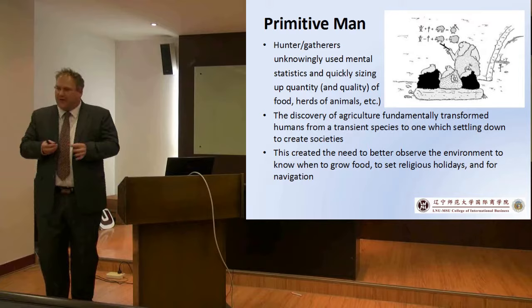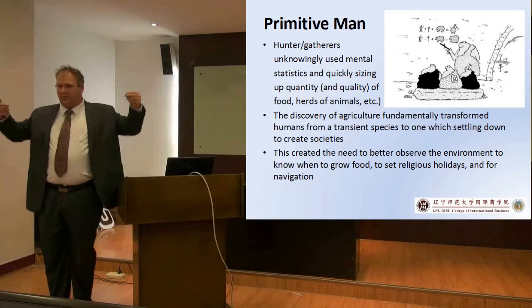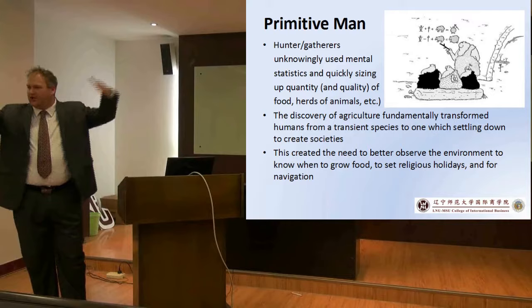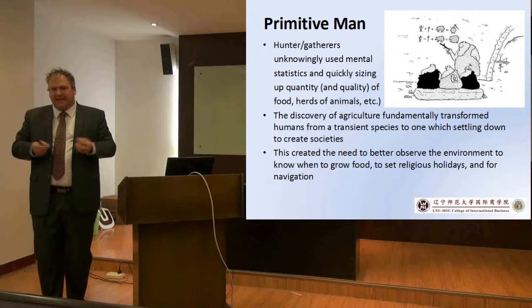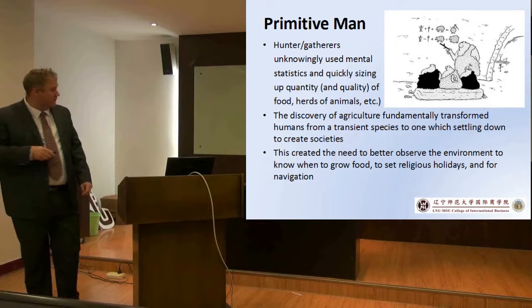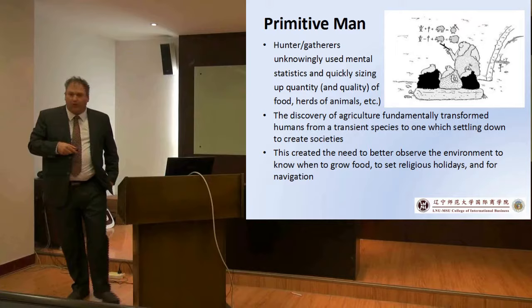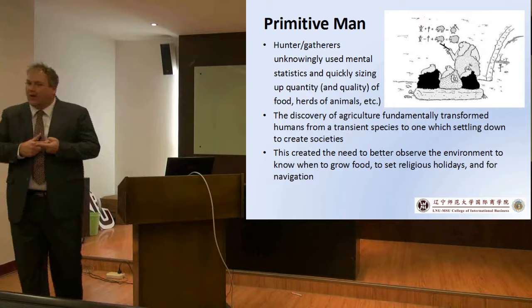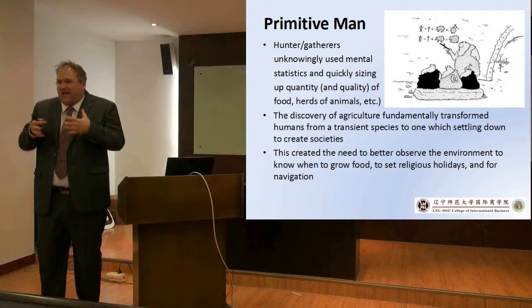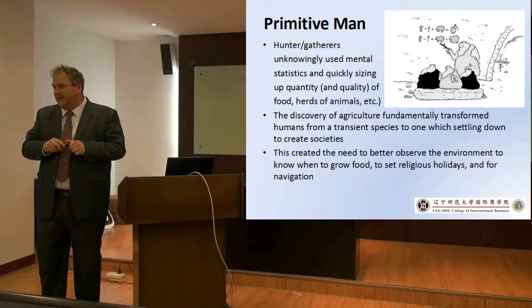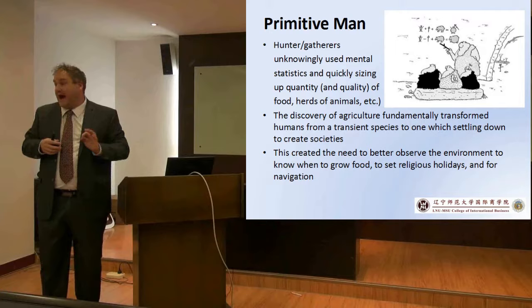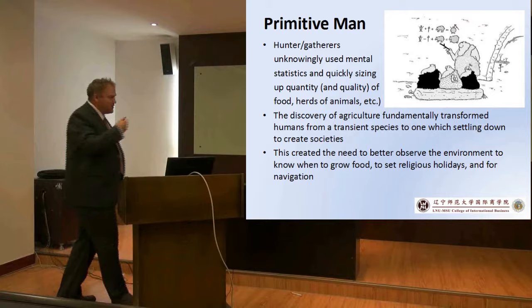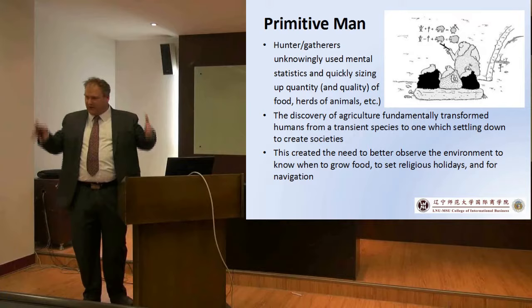We discovered that if we grow plants, we can keep the food supply stable. Because of that, our population grows, and that creates the situation where we need things to help us survive — math and science being one of them. This also created the need to observe the environment: when to grow food, religious holidays, and navigation. Navigation is extremely difficult — we take it for granted today with GPS and maps, but people never had that.